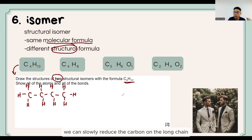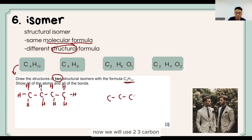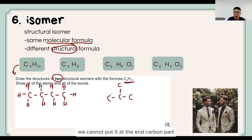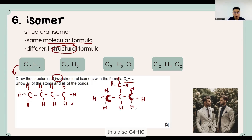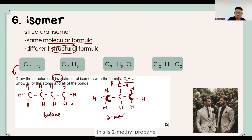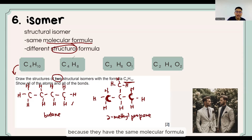Other than that, we can slowly reduce the carbon on the long chain. Initially we have 4 carbons; now we reduce to 3 carbons. The 1 remaining carbon we must put on the middle carbon — we cannot put it at the end carbon because that would be exactly the same as butane. So we put the carbon in the middle. This is also C4H10 — this is 2-methylpropane. Both are structural isomers because they have the same molecular formula but different structural formulas.